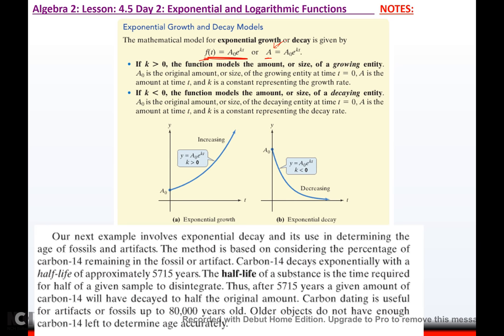One example of where exponential functions are used is to determine the age of fossils and artifacts. Archaeologists do this all the time. The method is based on considering the percentage of carbon-14 remaining in the fossil or artifact. Carbon-14 decays exponentially with a half-life of approximately 5,715 years. The half-life of a substance is the time required for half of a given sample to disintegrate. Thus, after 5,715 years, a given amount of carbon-14 will have decayed to half the original amount. Carbon dating is useful for artifacts or fossils up to 80,000 years old. Older objects do not have enough carbon-14 left to determine age accurately.